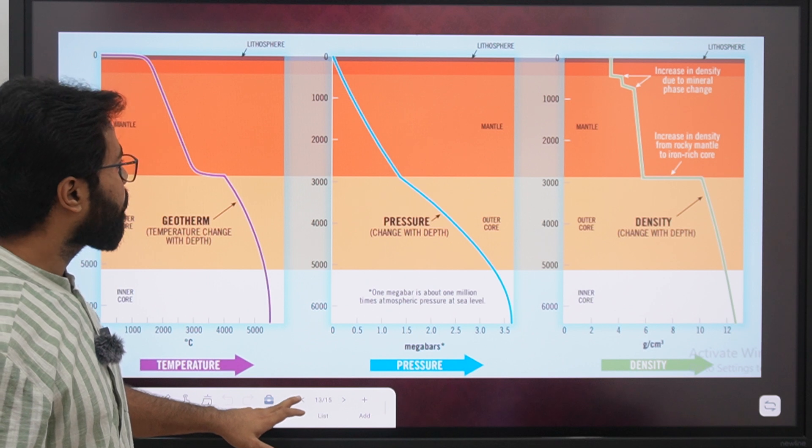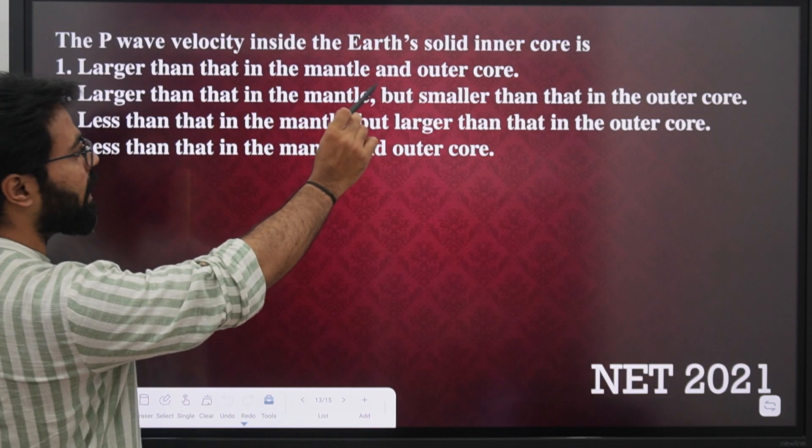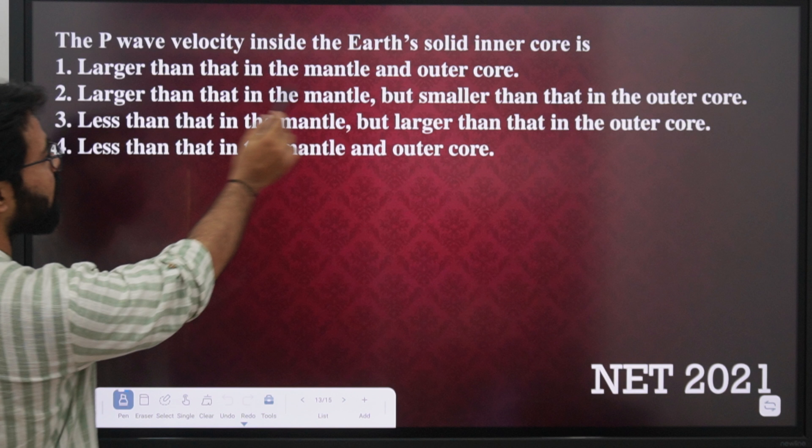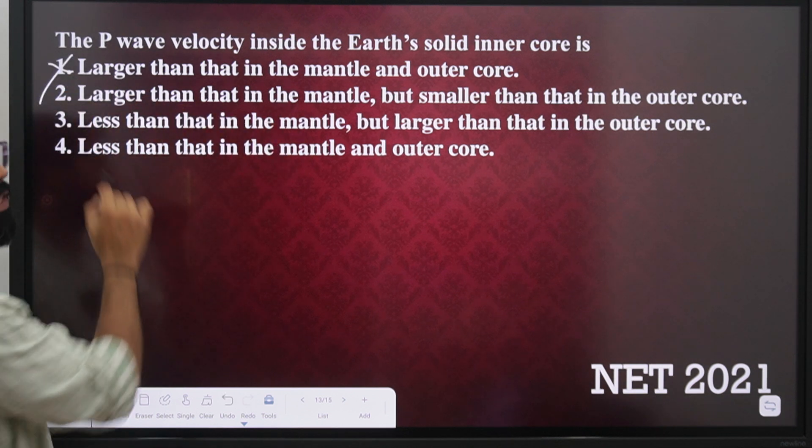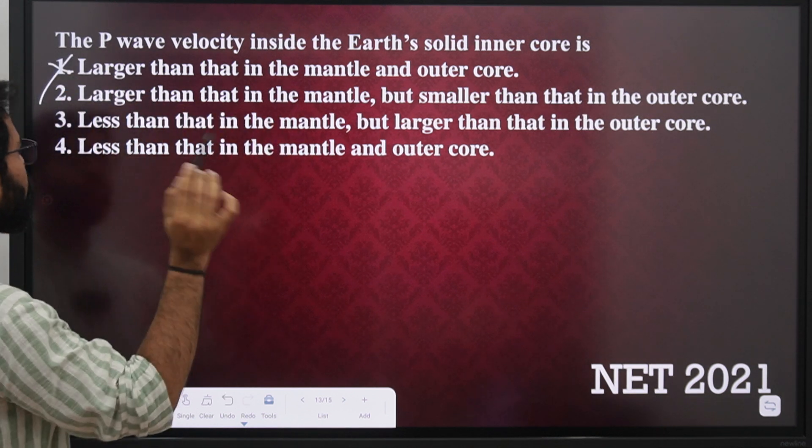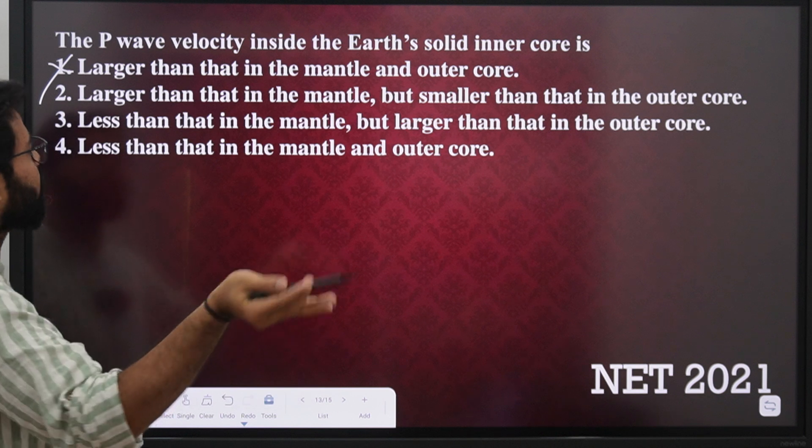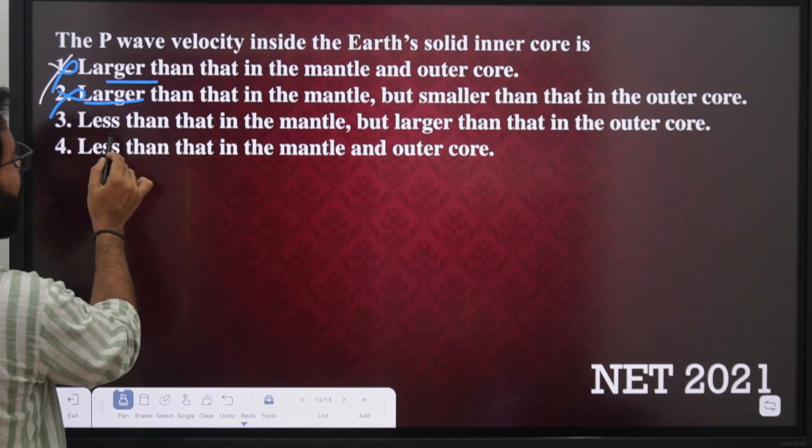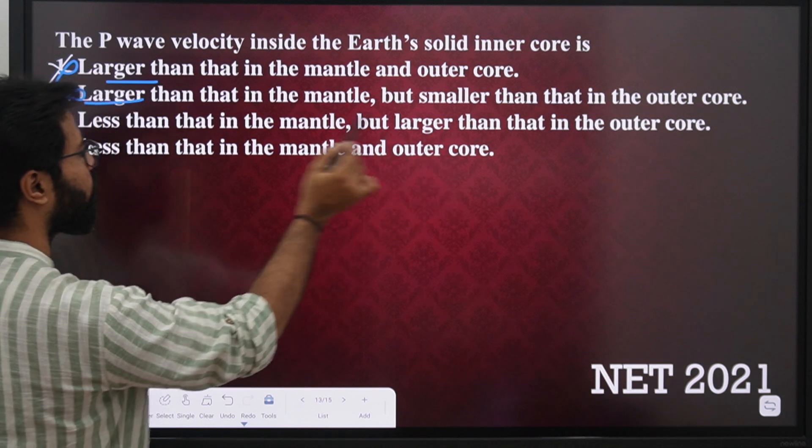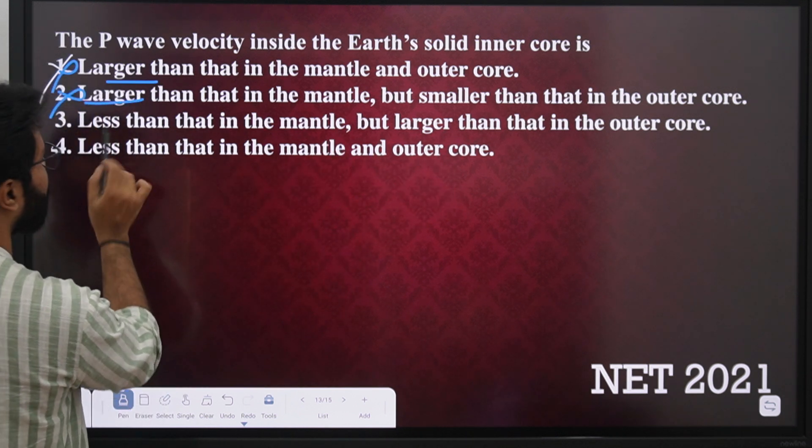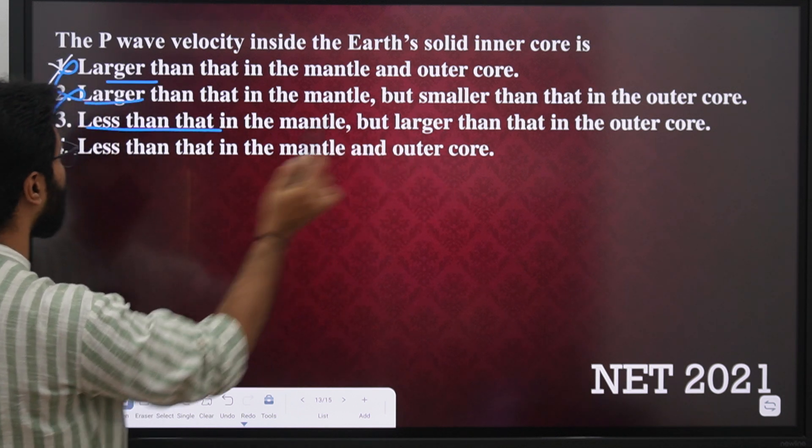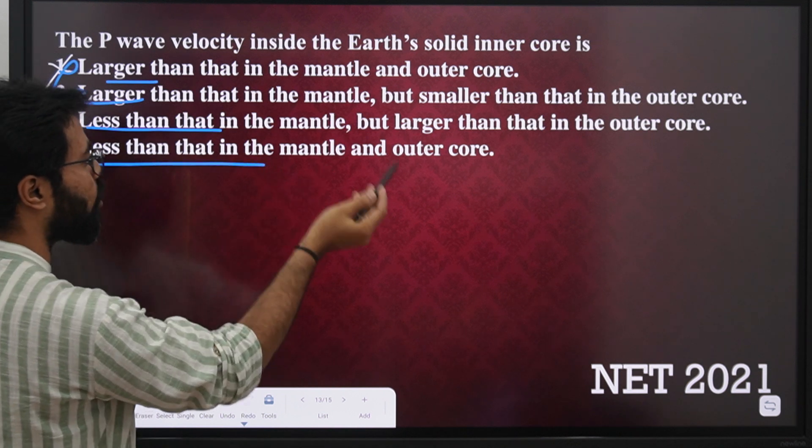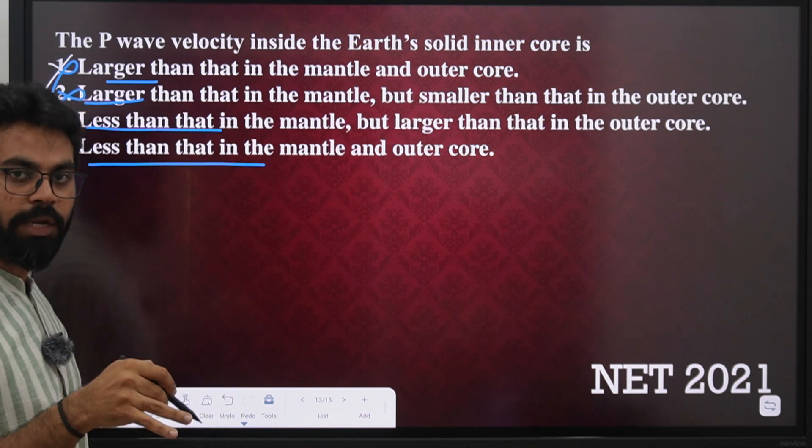So if we talk about this question, the P-wave velocity in inner core will be larger than the mantle? No, it cannot be larger than the mantle. Why? Because inner core is less rigid compared to mantle. So the two options with 'larger' are eliminated. Now, larger than the mantle but larger than the outer core? Or less than the mantle and less than the outer core? The outer core is liquid, so it cannot be less than outer core. So the answer will be C.